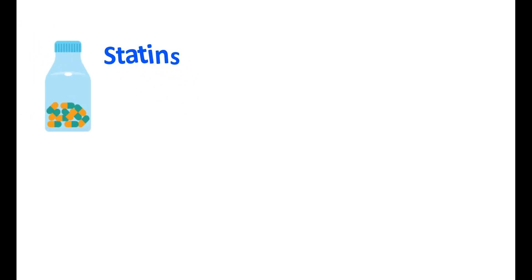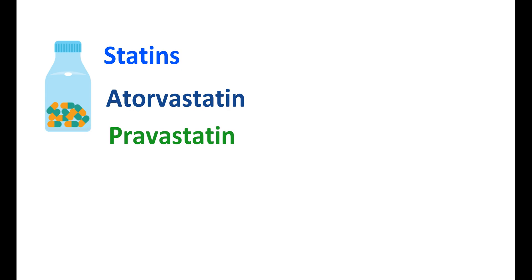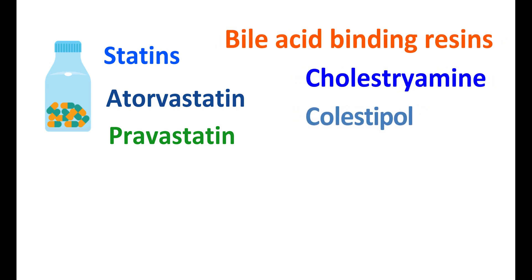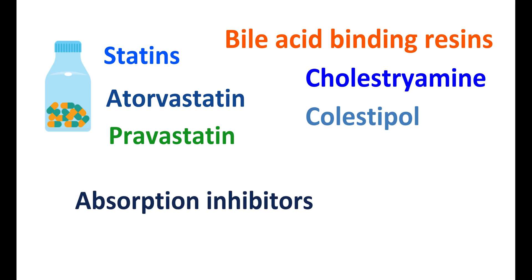Cholesterol control can be achieved by well-known medications like statins such as atorvastatin and pravastatin. Another category of drugs acts on bile acids. These are of two types: bile acid binding resins like cholestyramine and colestipol, and bile acid absorption inhibitors like ezetimibe.